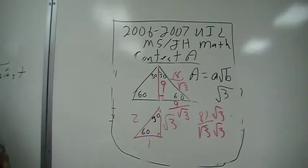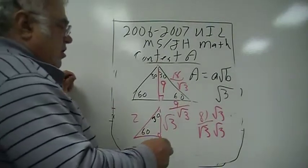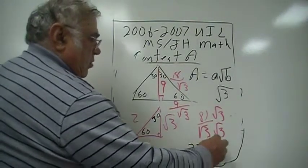you rationalize it by multiplying by that square root, and so this works out to be 3 into 81 is 27 square root of 3.